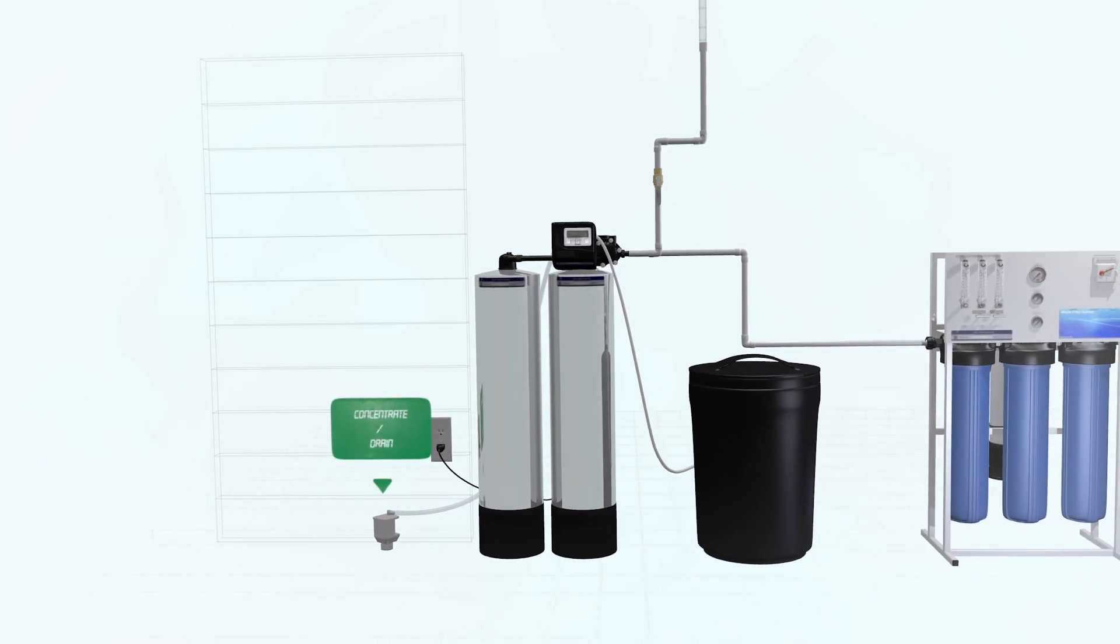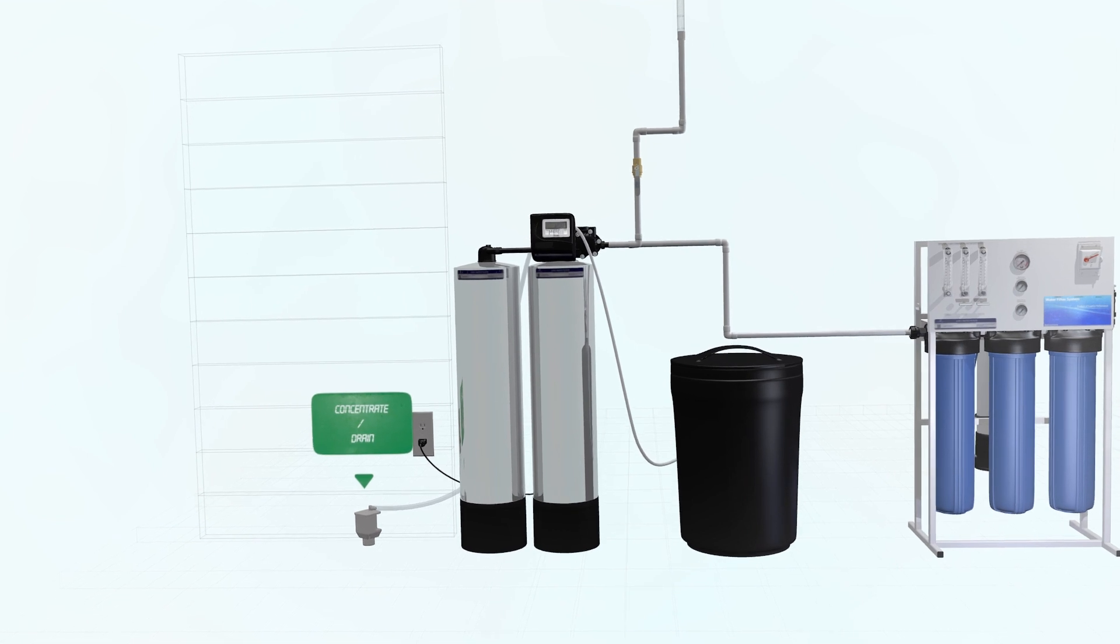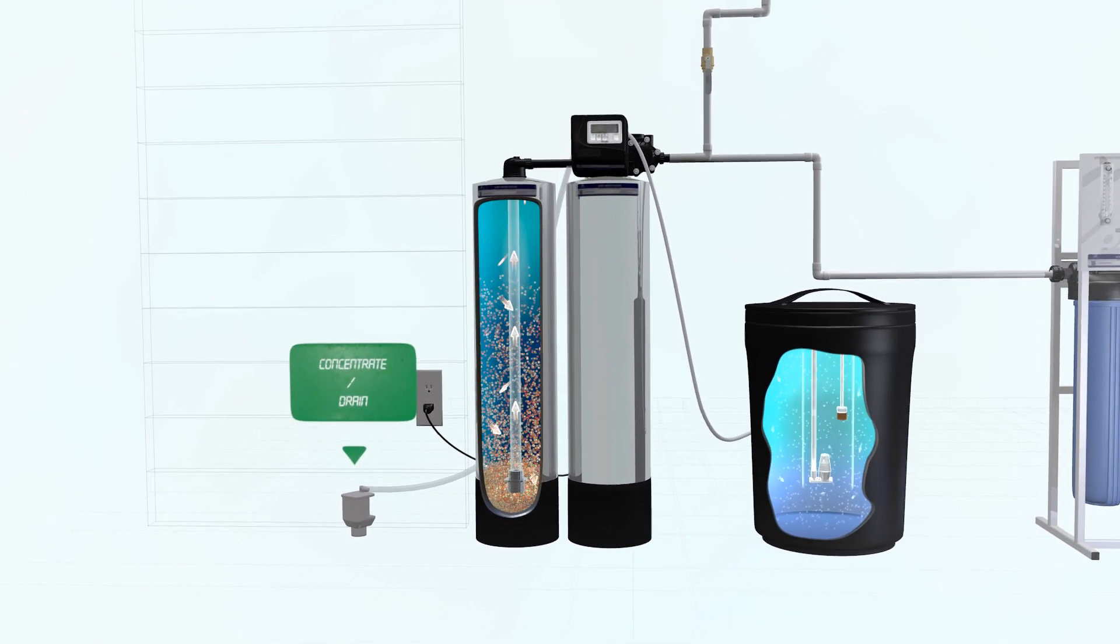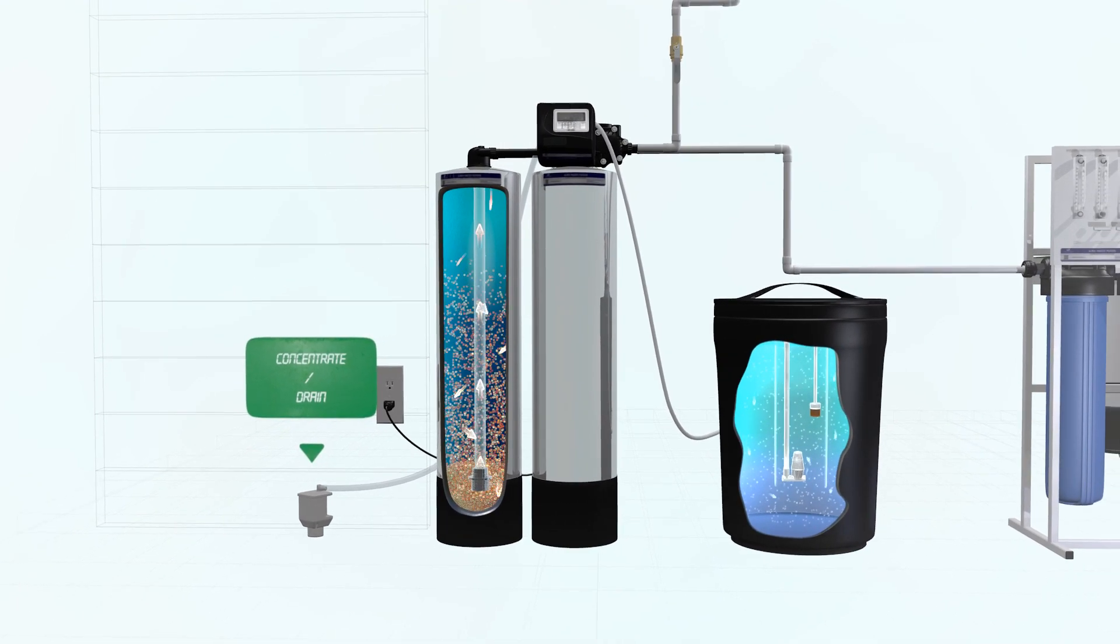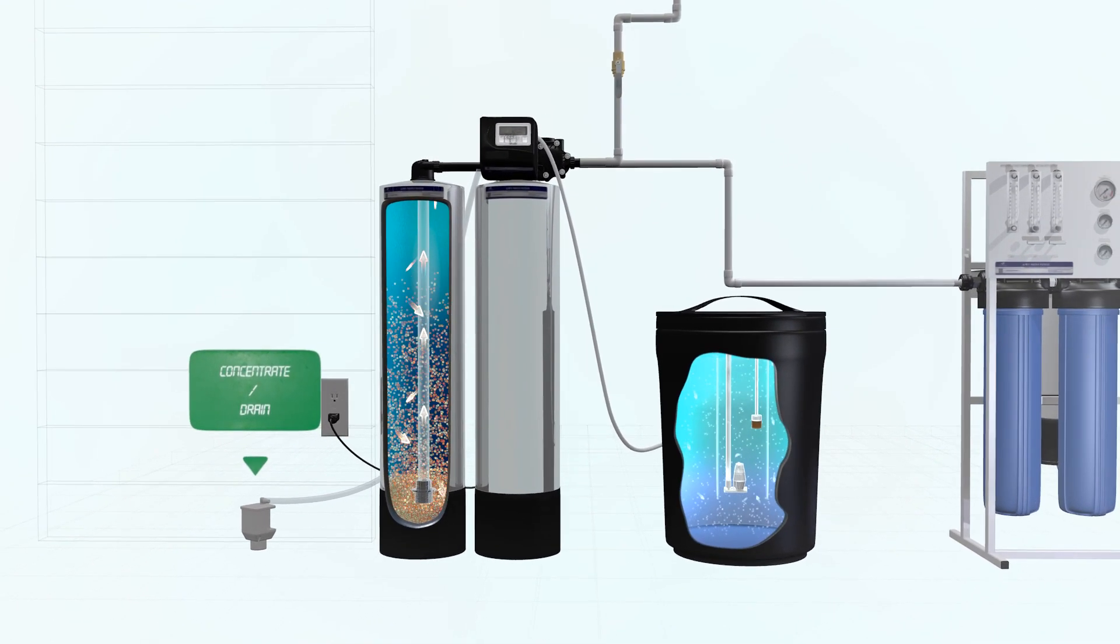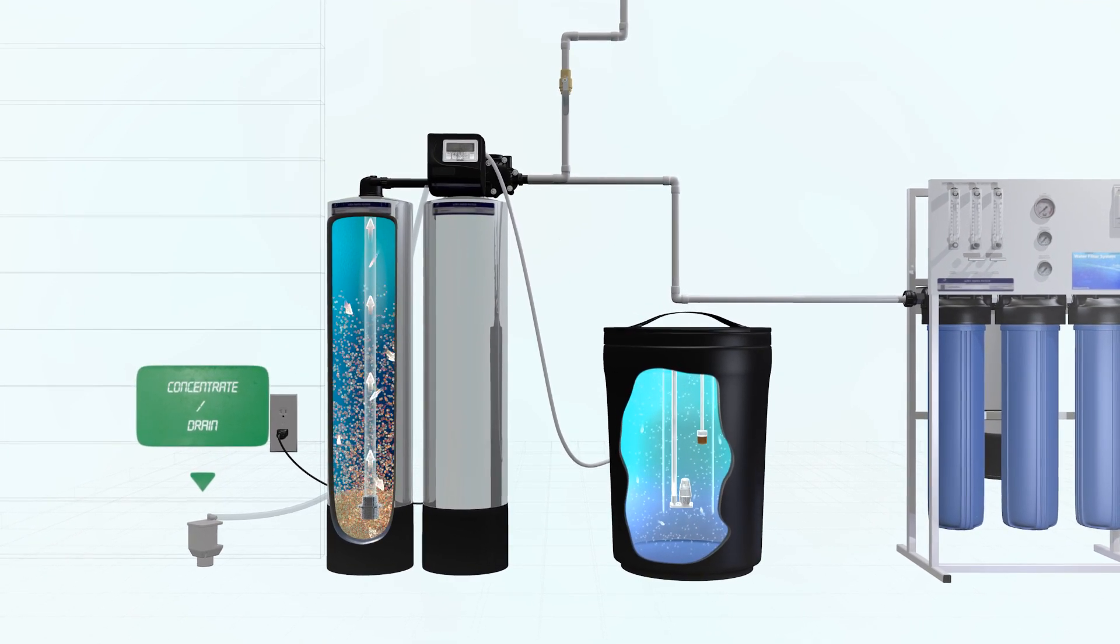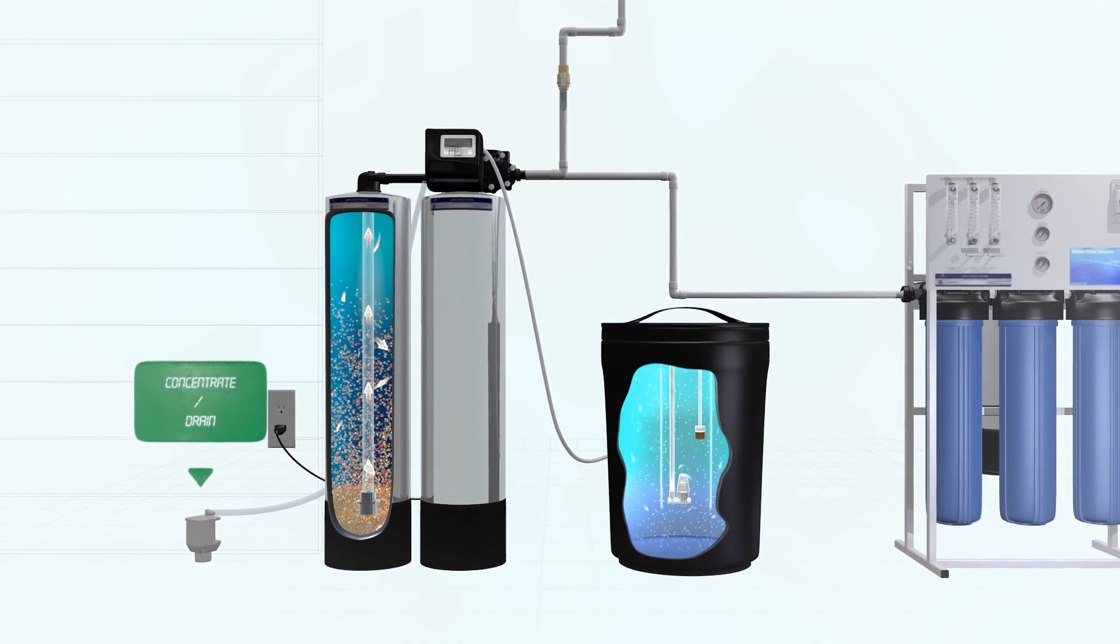Twin water softeners have two separate resin tanks. This enables one tank to regenerate while the other remains in service. The APEX WS-2050 twin softener is recommended for the MRC Series and will ensure that softened water is always available, even during regeneration cycles.